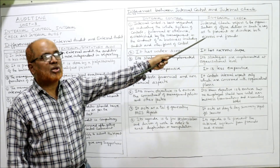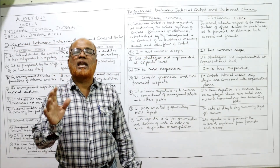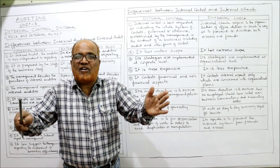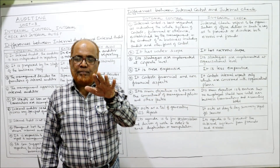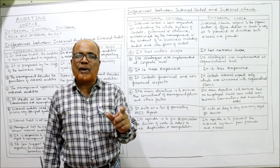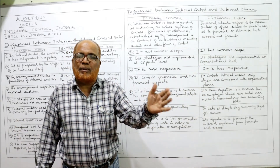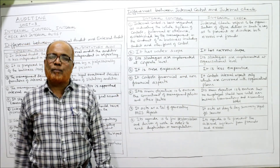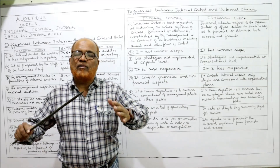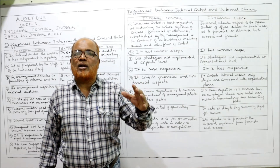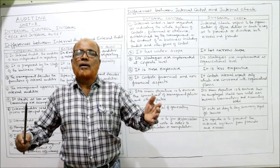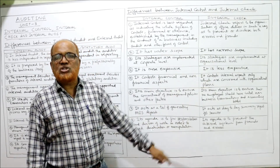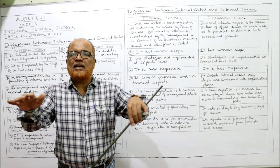Internal check refers to the organization of office duties in such a way as to prevent or disclose both errors and frauds. It is the assignment of duties among staff members so that fraud and error are prevented. Regarding scope: internal control has a wider scope because it includes all financial and non-financial controls, including internal check, internal audit, and any other forms of control. The scope of internal check is very narrow — it is simply assigning duties to staff members to reduce fraud and error.